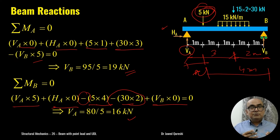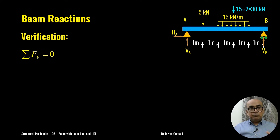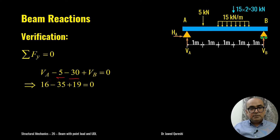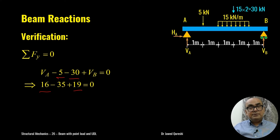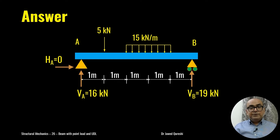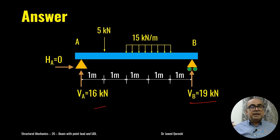Now I verify: from ΣV=0, Va + Vb − 5 − 30 = 16 + 19 − 35 = 0. The results check out. So the final reactions are: Ha = 0, Va = 16 kN, and Vb = 19 kN. Remember, reactions must be found before plotting shear force and bending moment diagrams, as we will need these forces.